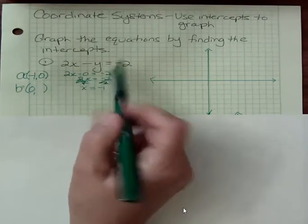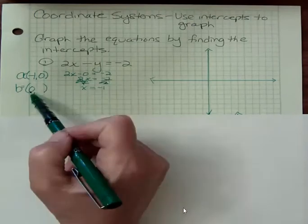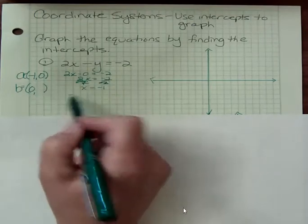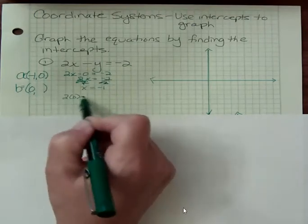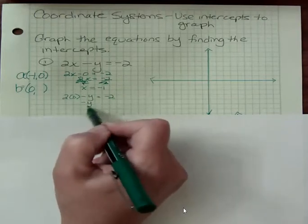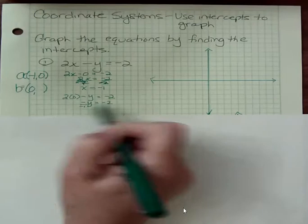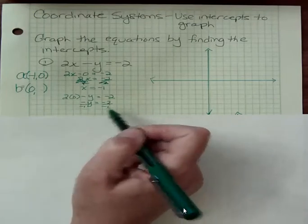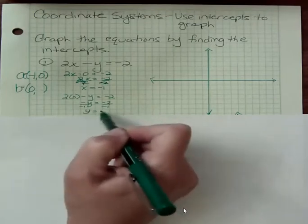And then, what if I want to find the y-intercept? I make x zero, so I would say two times zero minus y is negative two. The zeros go away. Negative y is negative two, and if I divide both sides by negative one, I get y equals two.